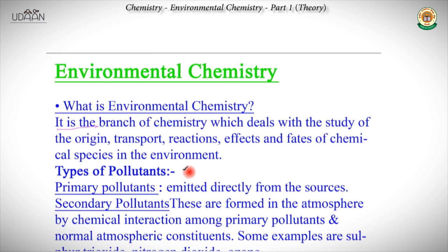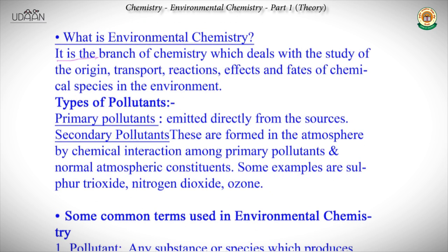Environmental chemistry is basically concerned about pollution of the environment, its effects, causes and impact on human race. We would first be discussing the types of pollutants. There are basically two types of pollutants: primary and secondary. Primary pollutants are those which are emitted directly from the sources.